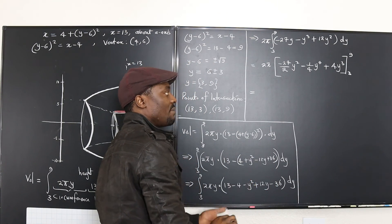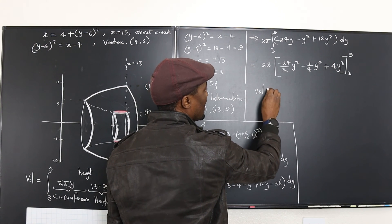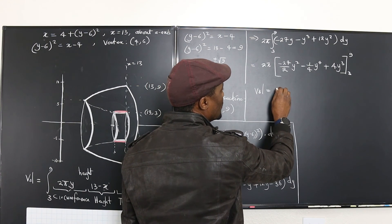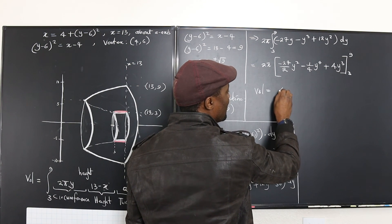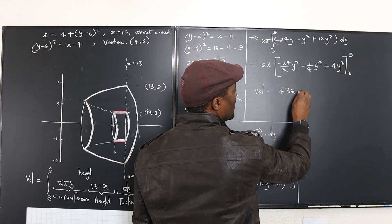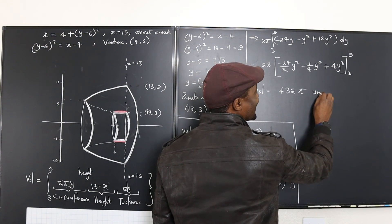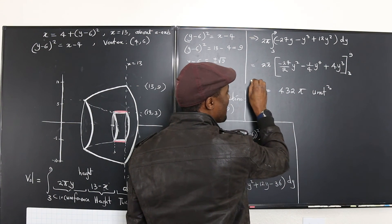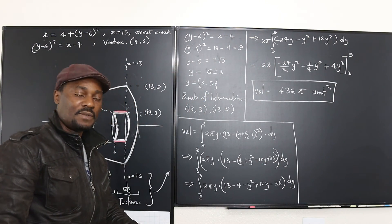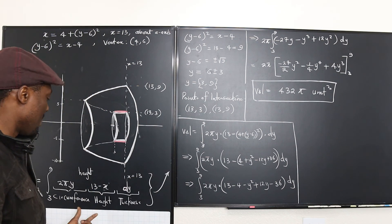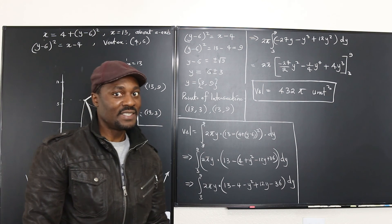I'm not going to spend time evaluating this here — the volume will be equal to 2π times whatever you get when you evaluate from 3 to 9, and it comes out to 432π cubic units. Do this evaluation yourself. Remember, the purpose of this video was to show you how to set this up and arrive at the integral — after that, the integration is your business.